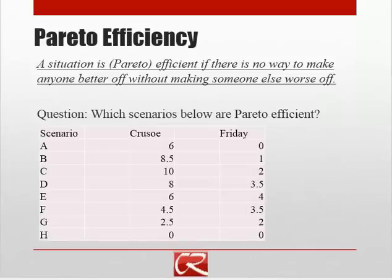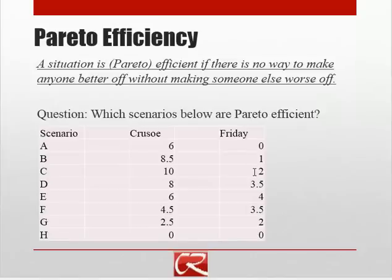One way to look at that is to look at the different scenarios in this table and think about which scenarios are Pareto efficient. Let's suppose we start in scenario A. Moving to scenario B makes both Crusoe and Friday better off — Crusoe has gains of 2.5, Friday has gains of 1, so they both gain. Is B efficient? No, because when we move from B to C, they also both benefit. So B is also not efficient.